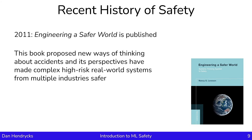Now let's look at some past developments. In 2011, the book Engineering a Safer World was published. This book proposed many new ways of thinking about accidents, and its perspectives have made complex, high-risk, real-world systems from multiple industries safer. We'll be using this as a basis for much of our discussion of risk analysis in this course.